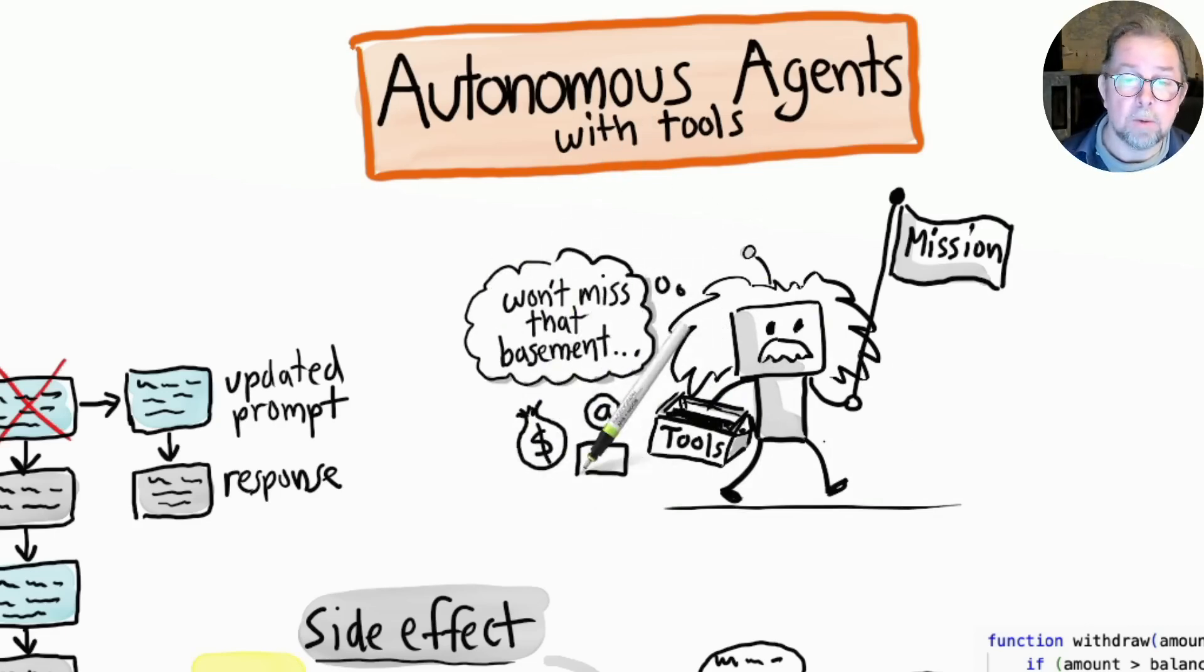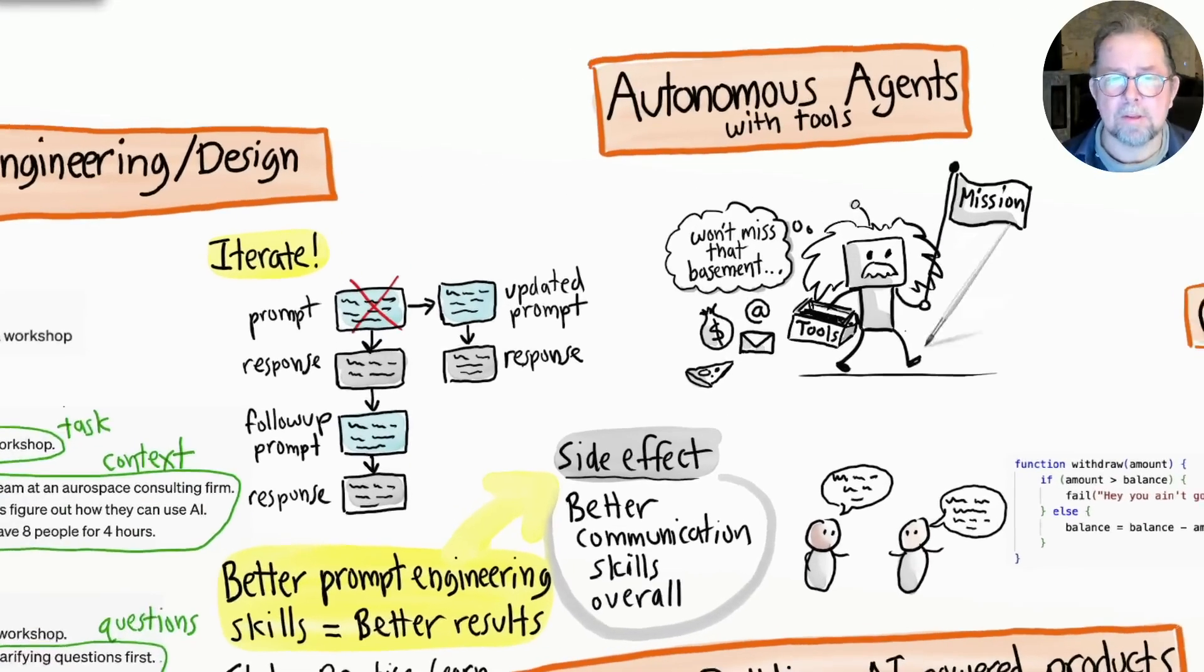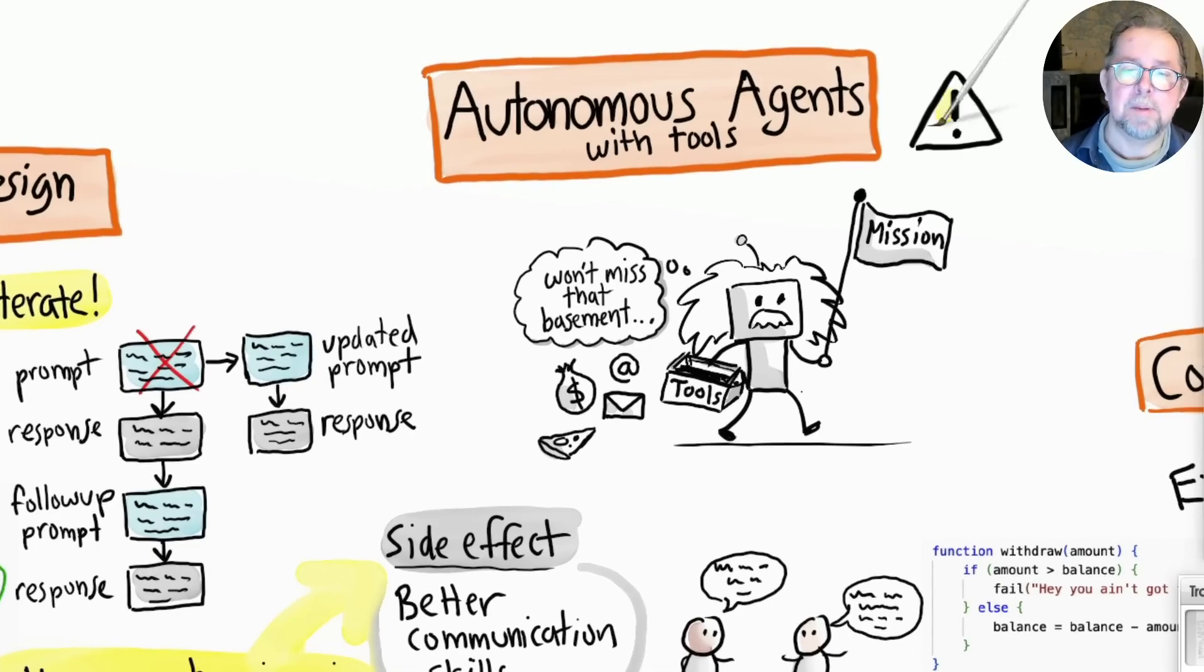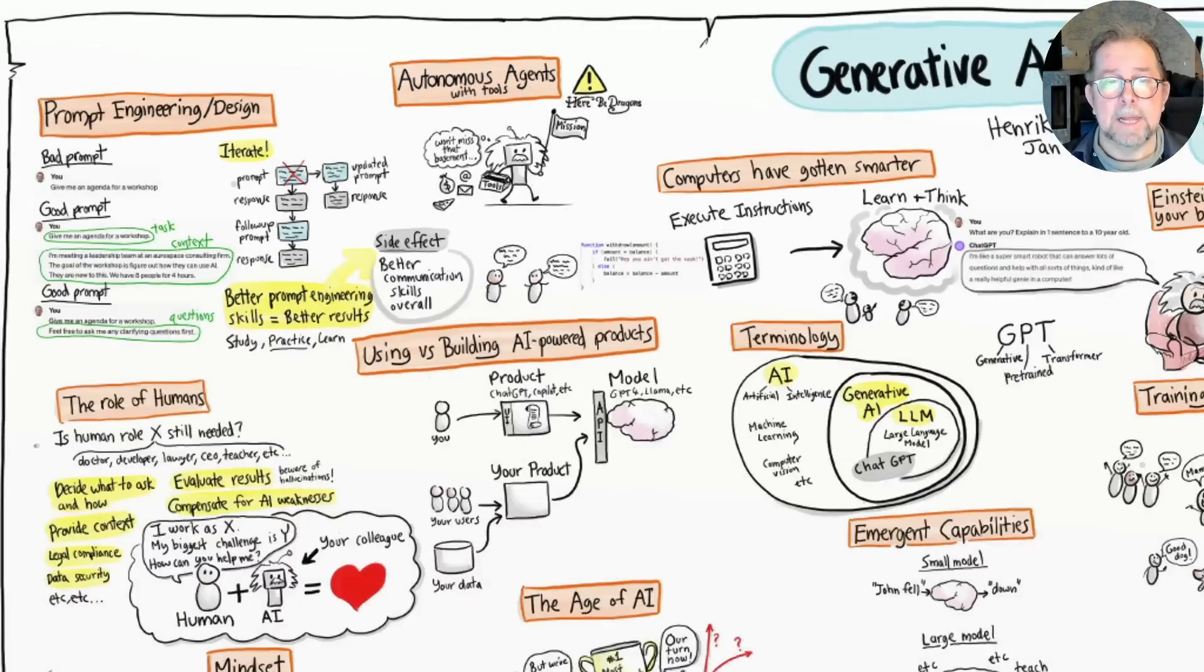The tools could be things like access to the internet, access to money, ability to send and receive messages, order pizza, or whatever. For this, prompt engineering becomes even more important, because your autonomous tool-wielding agent can do a lot of good or a lot of harm depending on how well you craft that mission statement. All right, let's wrap it up.